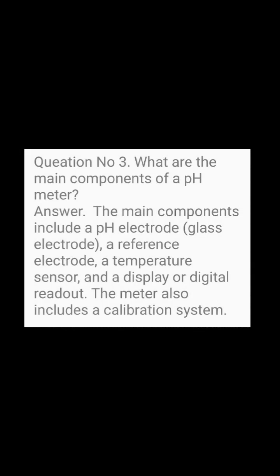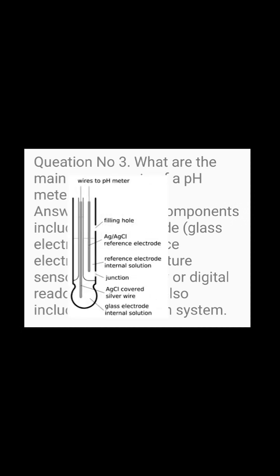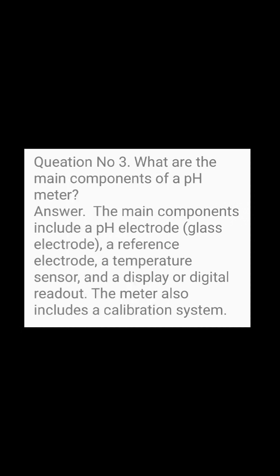Question number 3: What are the main components of a pH meter? Answer: The main components include a pH electrode (glass electrode), a reference electrode, a temperature sensor, and a display or digital readout. The meter also includes a calibration system.